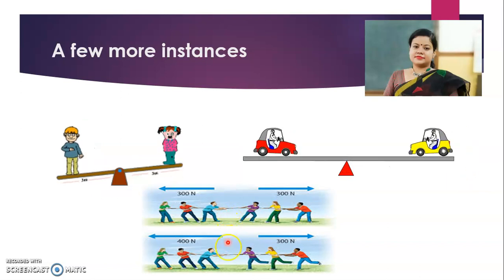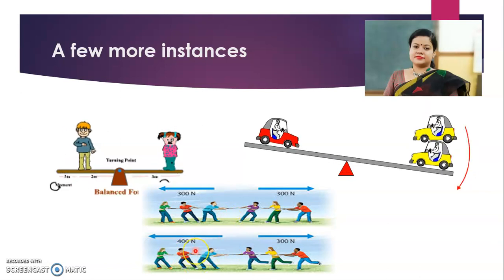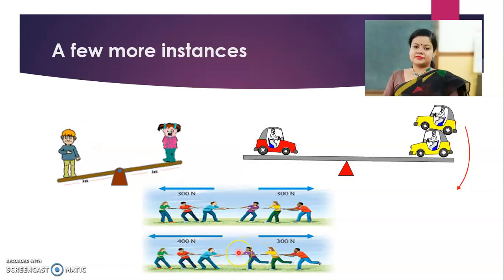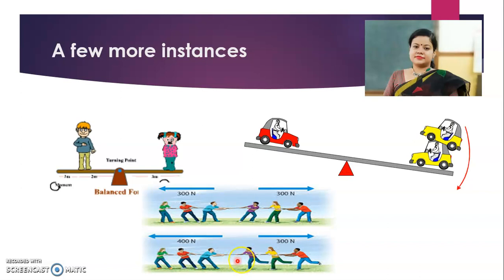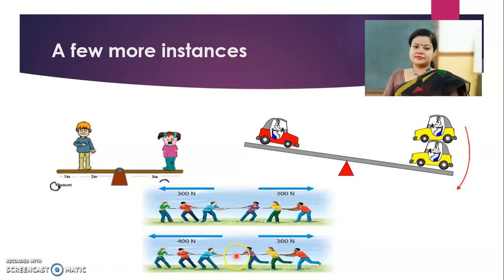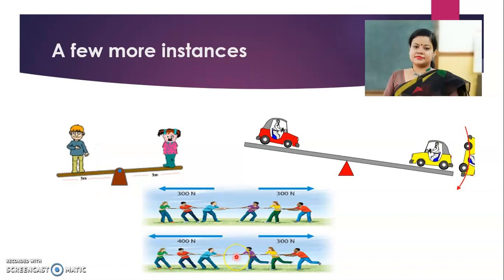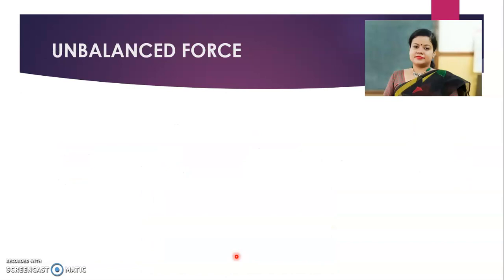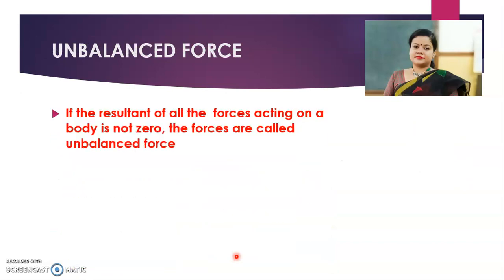In the second case, you can see that one team is applying a greater force, so they are moving towards the direction of the applied force and the rope is changing its position. Obviously, this is not a balanced force acting on the rope — so what is it? Unbalanced force. If the resultant of all forces acting on a body is not zero, the forces are called unbalanced force.